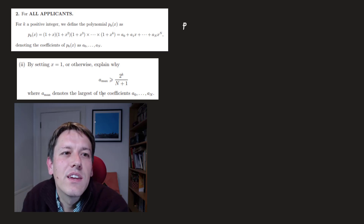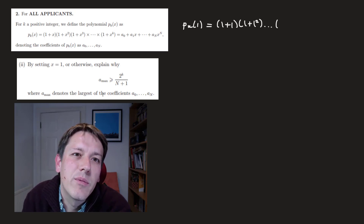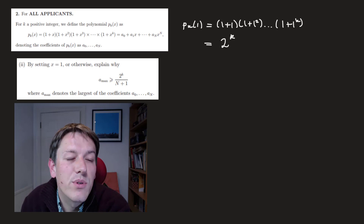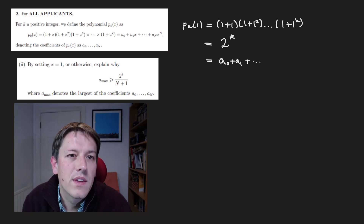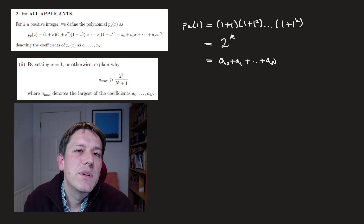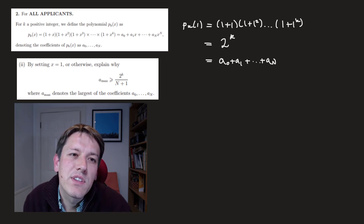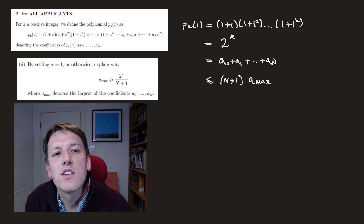So if we set x=1 here, we get p_k(1), which equals (1+1)(1+1²)... all the way up to (1+1^k). But obviously 1 to any power is 1, so this is just 2×2×2... all the way up to k factors, giving us 2^k. But it's also equal to a_0 + a_1 + ... + a_N, because if I put x=1 all the terms on the right-hand side just give us the coefficients, and there are N+1 terms.